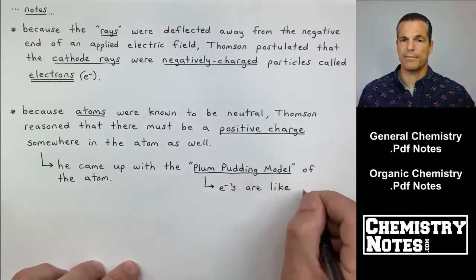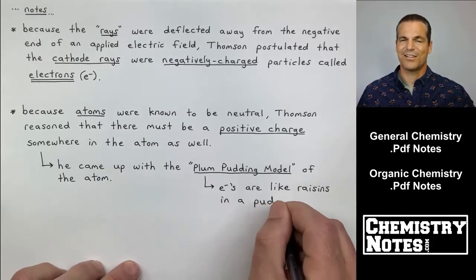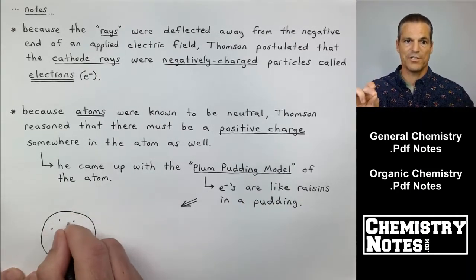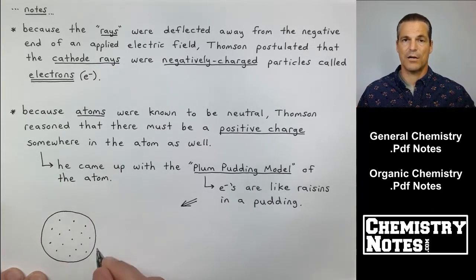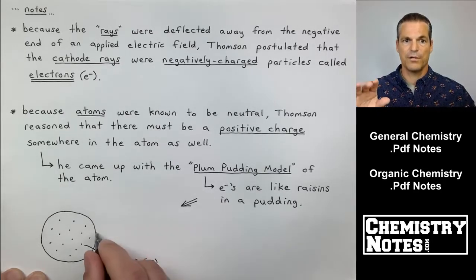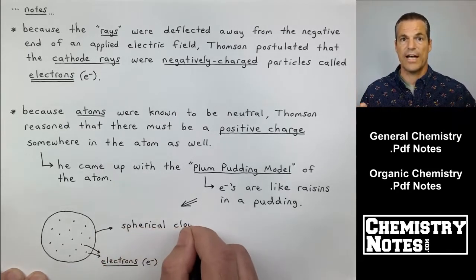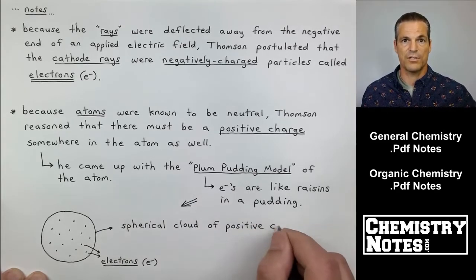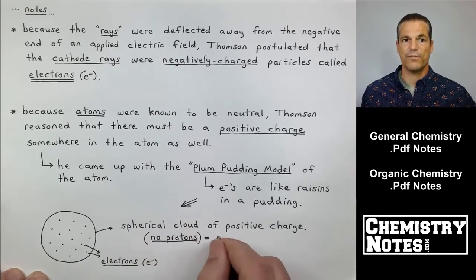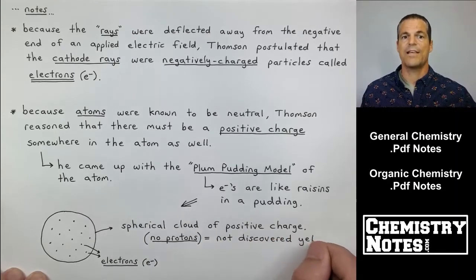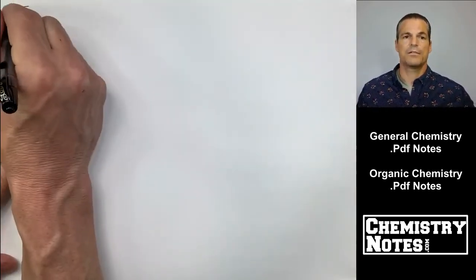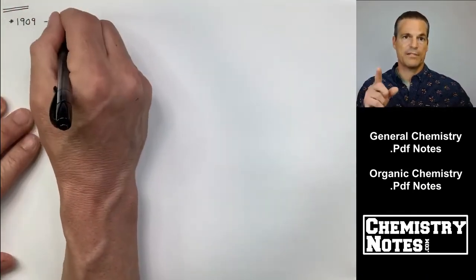In this plum pudding model, the electrons are kind of like raisins in a pudding. The electrons are negatively charged and they're little point charges. Those dots are my negative electrons. Then he claims that the rest of it, the pudding if you will, or the area of the circle that I've sketched, that spherical cloud, is just a zone of positive charge. Electrons are the little dots and then the cloud itself, the white interior, that is an area of positive charge. Again, no mention of protons, those are not discovered yet. That's what he proposes, it's called the plum pudding model. We'll come back to the plum pudding model in a bit.